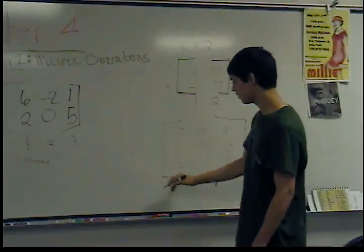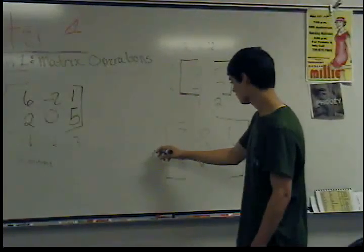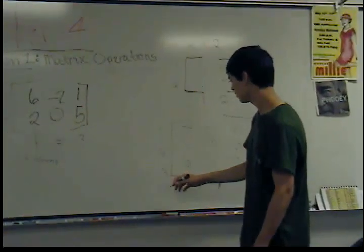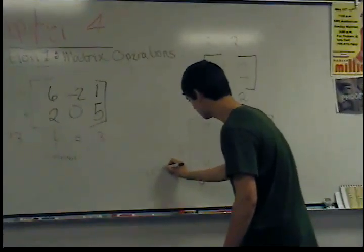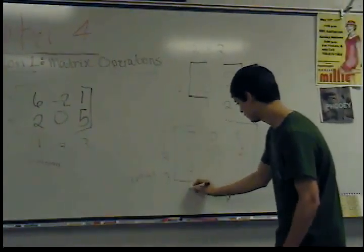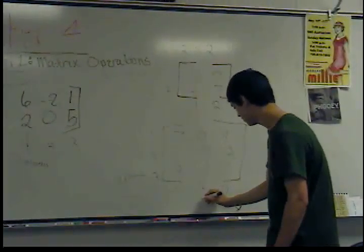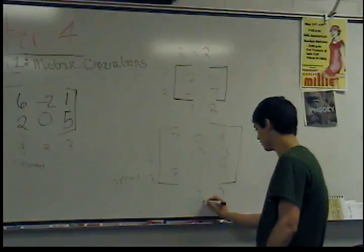And with this one over here, counting down again. It's 1, 2, 3. 3 rows. 1, 2, 3. 3 columns.